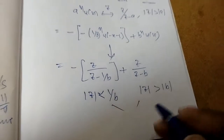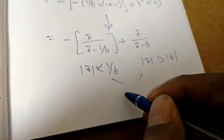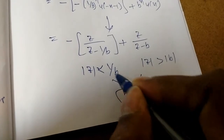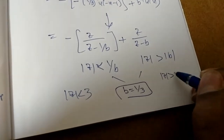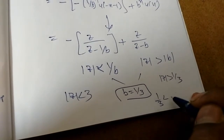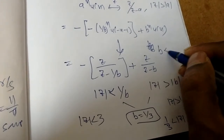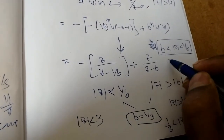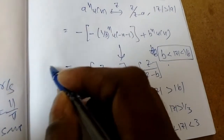Now we have to take the common ROC. Since b is between 0 and 1, for example if b equals 1/3, then 1/b equals 3. So the first condition gives mod z less than 3, and the second gives mod z greater than 1/3. The common ROC is b less than mod z less than 1 by b. This is the common ROC and this is the Z transform.